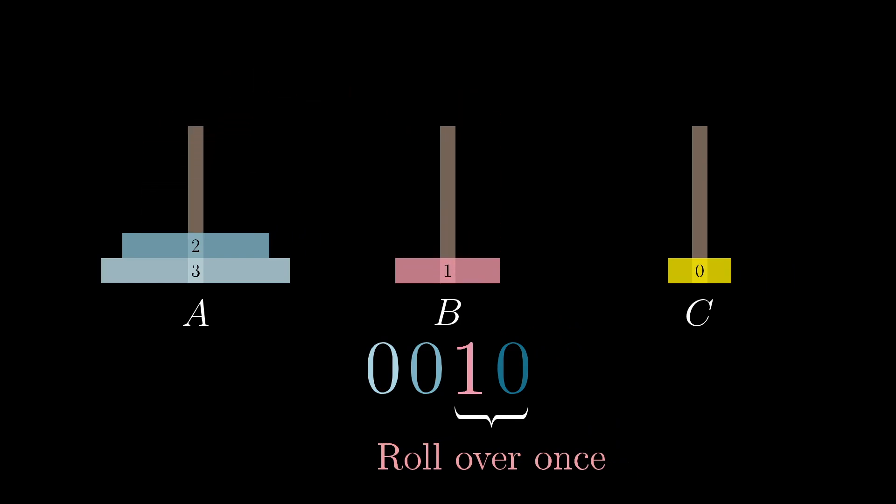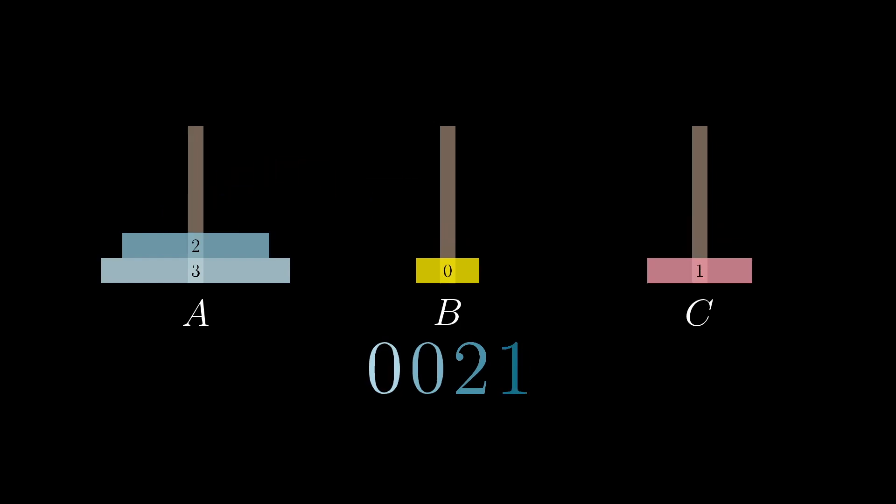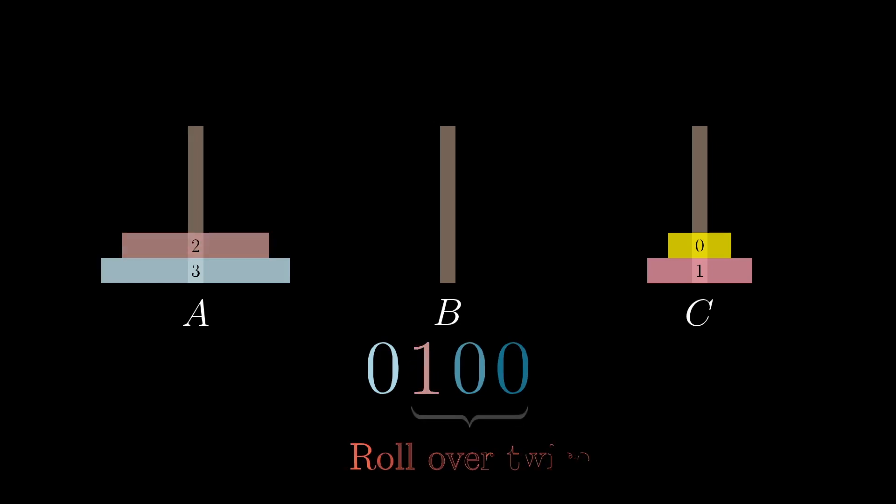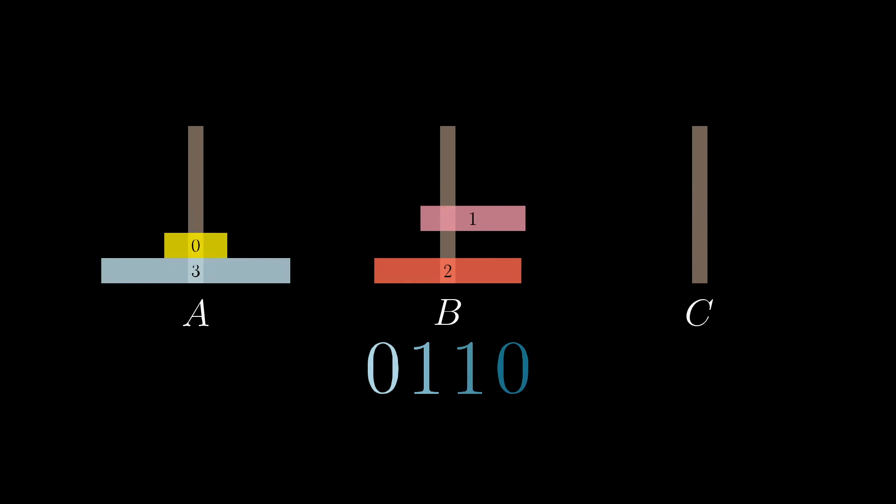And continuing on like this, you'd flip the last, move zero, flip the last, move zero, roll over, writing two zero, and then move disk one. Then twice more, you flip the last and move disk zero. Then whenever you roll over twice to the nines place, you move disk number two. Again, it's pretty fun to just sit back and watch this play out.